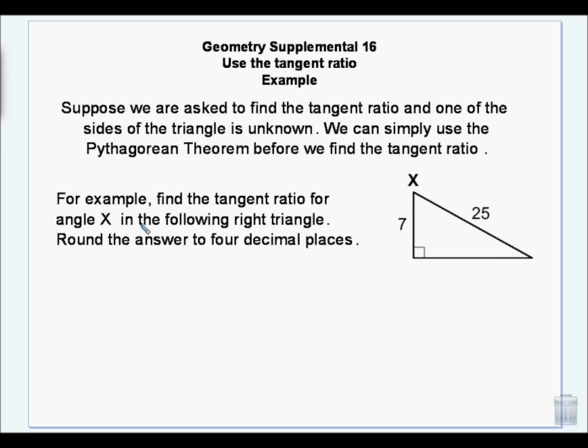Here we're going to find the tangent for angle x. And we round to four decimal places. So I need opposite over adjacent, right? I don't know opposite. So I'm going to use the Pythagorean theorem to find this value. So 7 squared plus b squared equals c squared, or 25 squared. So 49 plus b squared is equal to 625. So then I take 625, and I subtract 49. And b squared is equal to 576. So b is 24.